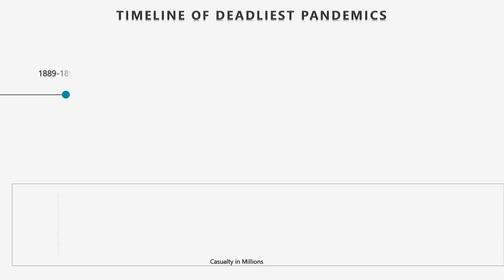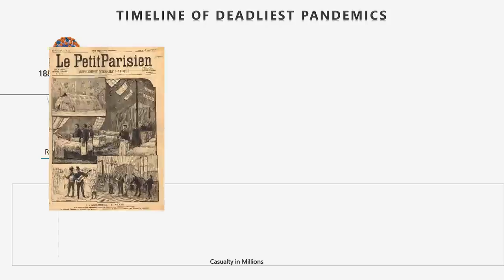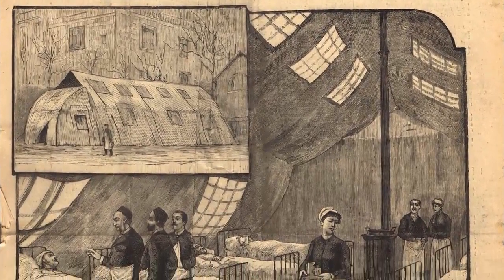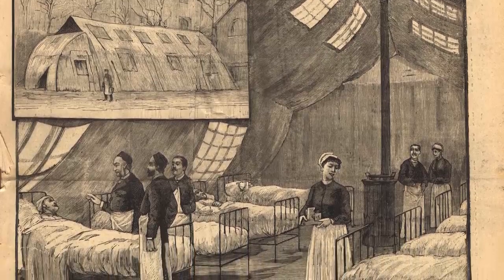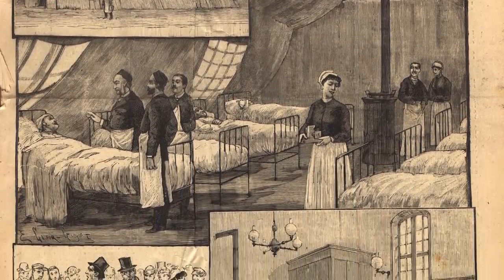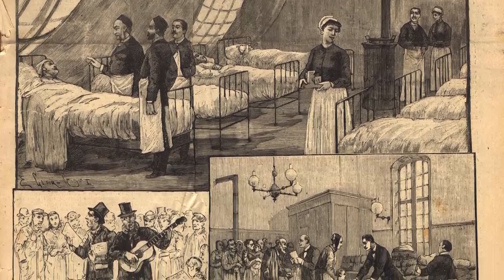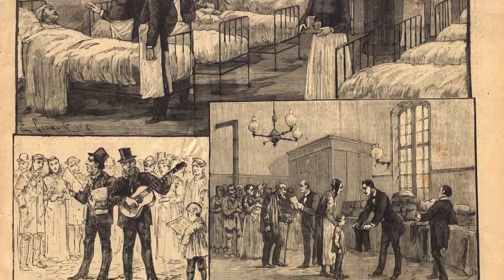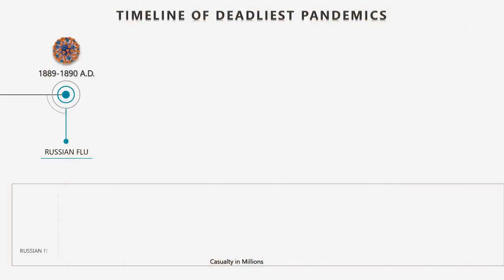At number 10: The 1889–1890 Flu Pandemic. The flu pandemic of 1889–1890 was a deadly influenza pandemic, dubbed the Russian Flu. Reanalysis of seroarchaeological data has indicated that influenza A subtype H3 is the most likely cause. This pandemic killed about 1 million people worldwide.